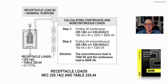In step one, we're going to figure the continuous load. In the title heading, we're calculating the non-continuous and the continuous load under 220.14(I) and 230.42(A)(1). If they're continuous, it would be 180 VA per outlet times 40 times 125%, giving 9,000 VA as the continuous load.